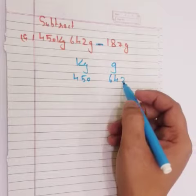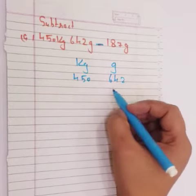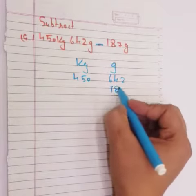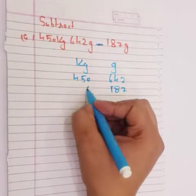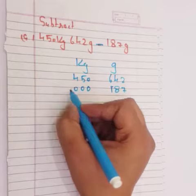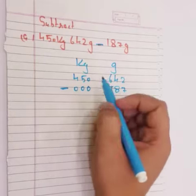450 kg mein iske saath me gram hai 642 minus 187 only gram hai. Yarni gram ki decid ye hai. Kg mein kuch nahi hai. To hum yaan pe note karenge 0, 0, 0 ko ki koji decid hi nahi hai. Karna hai hunko Subtract yarni ki minus.